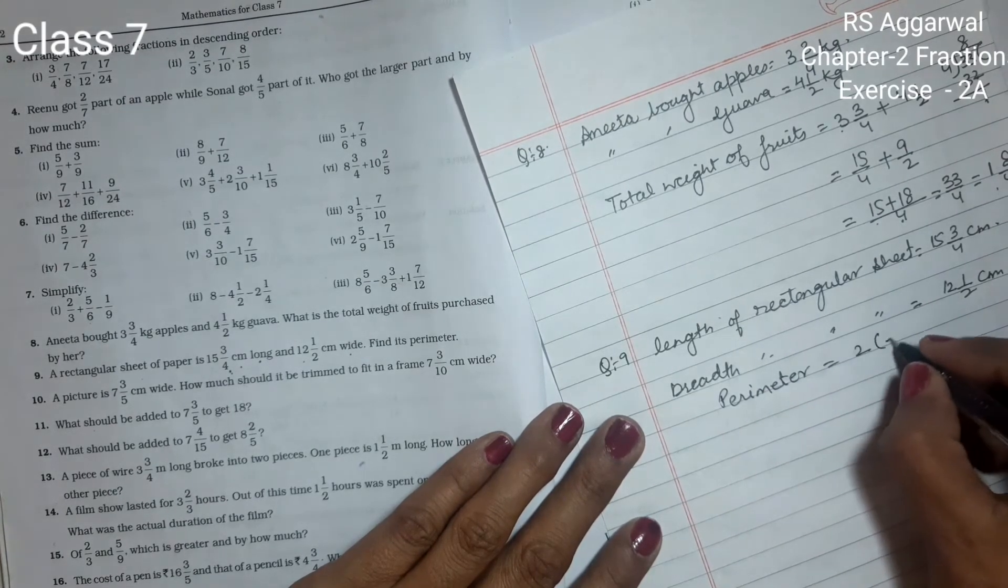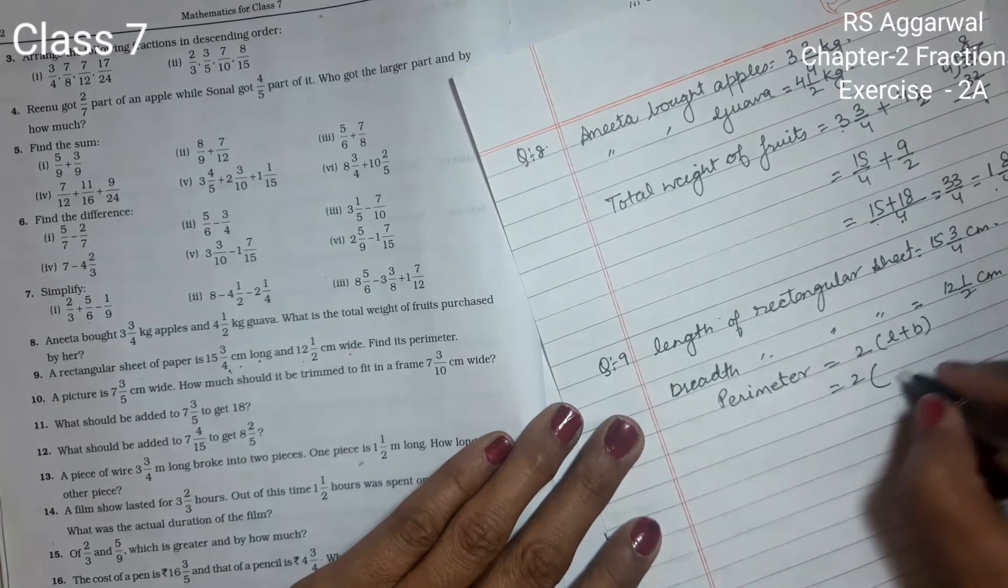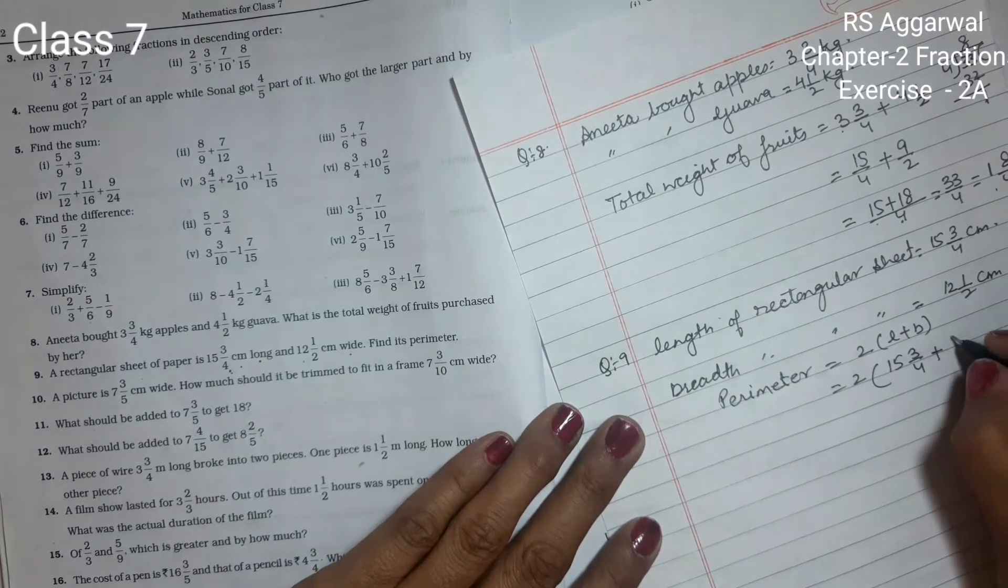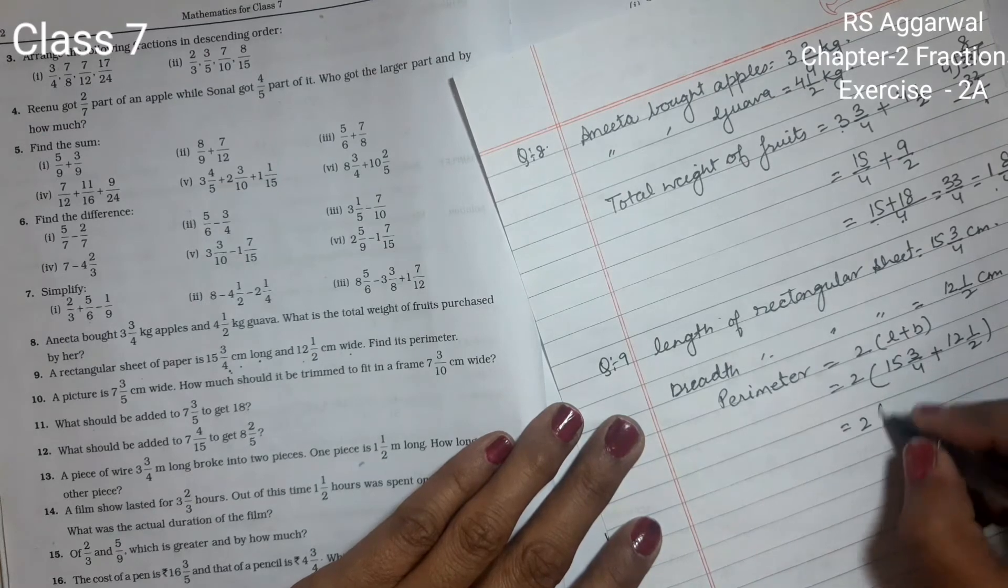So 2 times (length 15 whole 3 upon 4 plus breadth 12 1 upon 2).